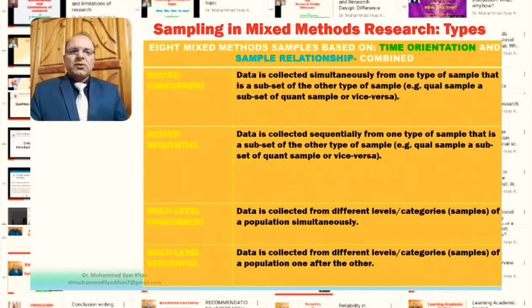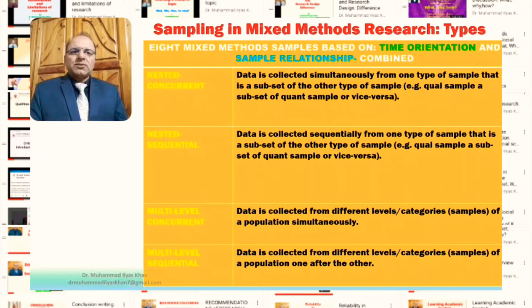The nested concurrent design is where data is collected simultaneously from one type of sample that is a subset of the other type of sample. Concurrent means the data is collected and sample is selected at the same time, but one sample is nested inside the bigger one. Generally, qualitative samples are smaller, so the qualitative sample will be a subset of the quantitative sample, though in some cases the opposite might also apply.